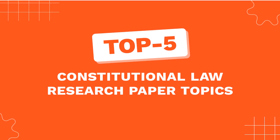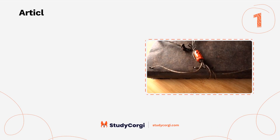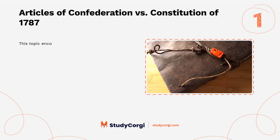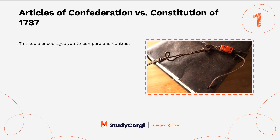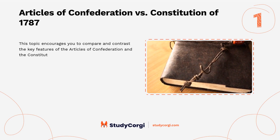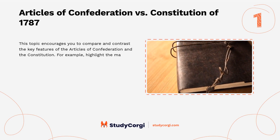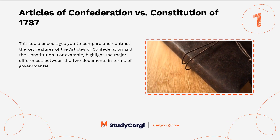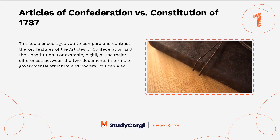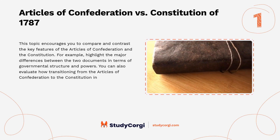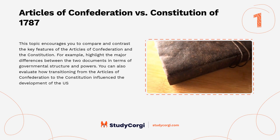Top five constitutional law research paper topics. Articles of Confederation versus Constitution of 1787: this topic encourages you to compare and contrast the key features of both documents, highlighting major differences in governmental structure and powers. You can also evaluate how transitioning from the Articles of Confederation to the Constitution influenced the development of the U.S. as a nation.